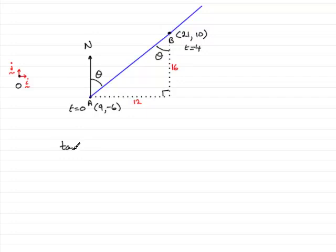So tan of the angle theta equals the opposite, 12, divided by the adjacent, 16. 12 divided by 16 is 0.75. So theta is equal to the inverse tan of 0.75.